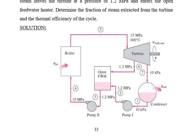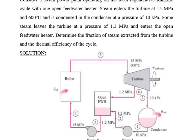We need to determine two things: the fraction of steam extracted from the turbine going to the open feed water heater, and the thermal efficiency of the cycle. There are three pressures given — 15 MPa, 1.2 MPa, and 10 kPa — along with the temperature. Our main focus is to find the thermal efficiency and the fraction of steam extracted.